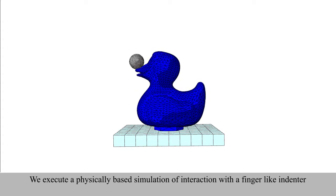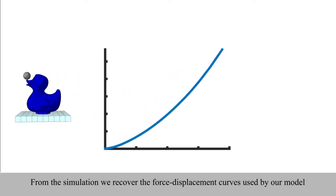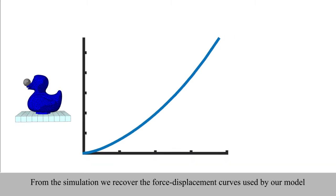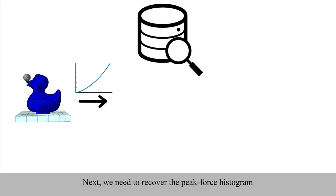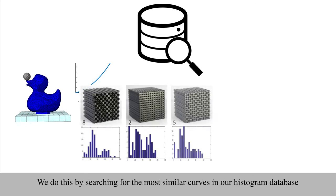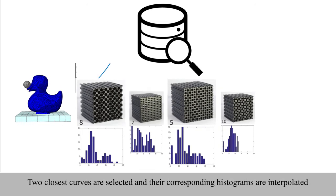We also demonstrate how this model can be extended to arbitrary shaped elastic 3D objects. To this end, a physically based simulation of an interaction with a finger-like indenter is used to recover force displacement data. To recover the peak force histogram, we use our histogram database for the cubes and search for the most similar curves. Two closest curves are selected and their histograms are interpolated.